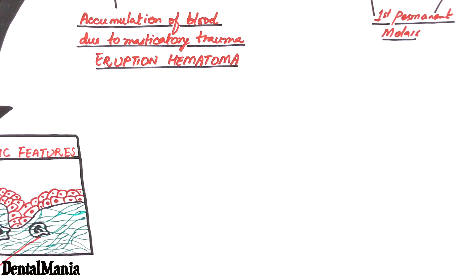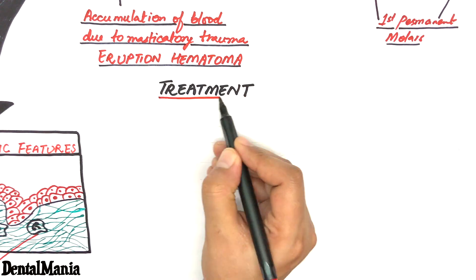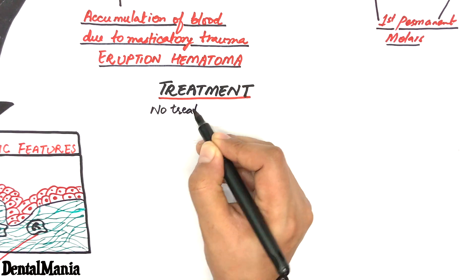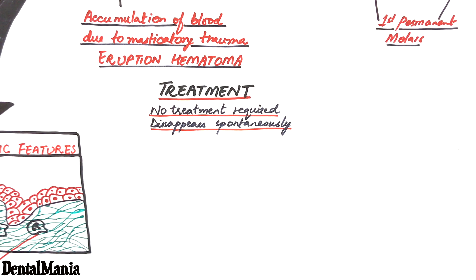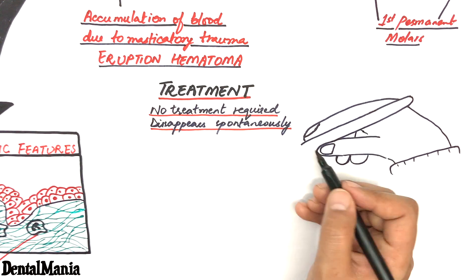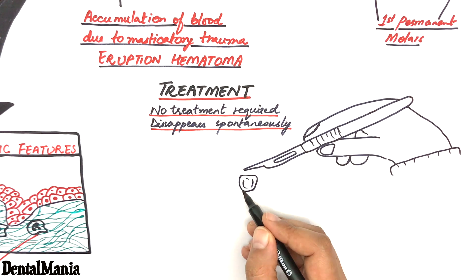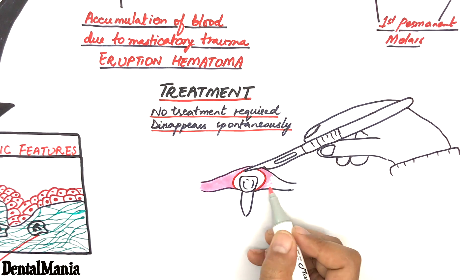Coming to the treatment, the cyst requires no treatment because it disappears spontaneously once the tooth erupts into the oral cavity. In some cases, due to the thick overlying epithelium, the tooth may not succeed in eruption. Such cases are treated by placing a small incision on the roof of the cyst, thus allowing the tooth to erupt into the oral cavity.